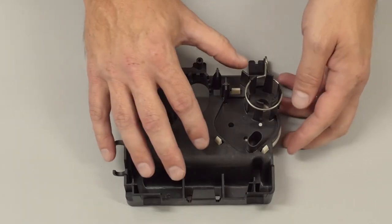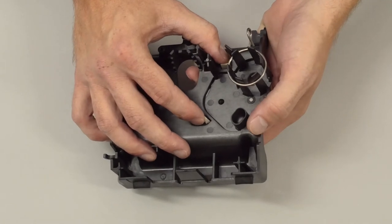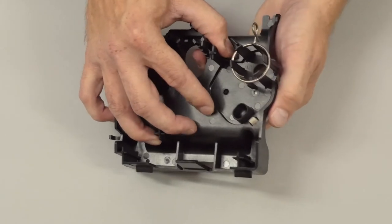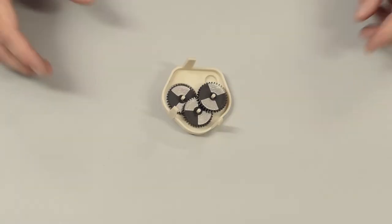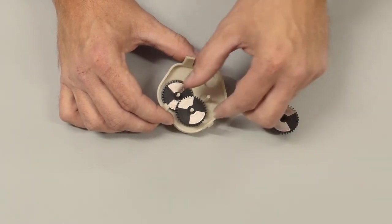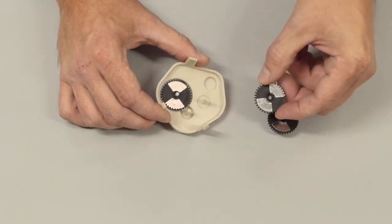To remove the drive gears, depress the three tabs to release the cover. Note that these gears are all the same size, so you don't need to worry about their orientation.